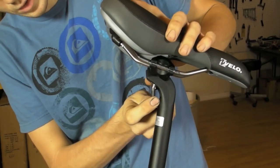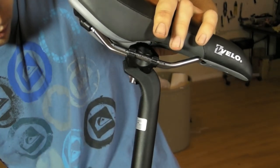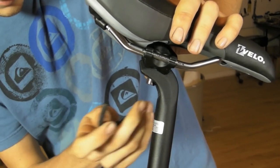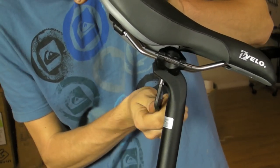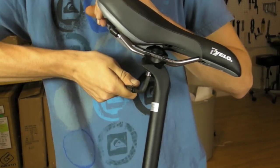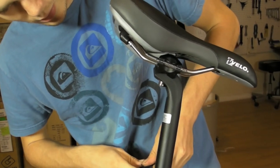There is a torque reading on the back of this seat post, and it is for 110 kilograms of force. Sometimes it will be inch-pounds, sometimes it will be newtons per meter, but this one is in kilograms of force.